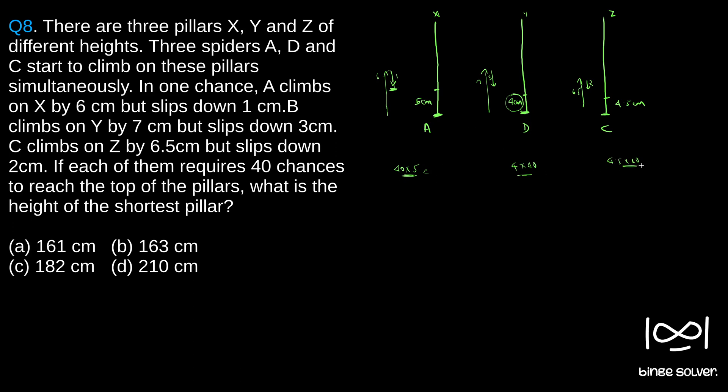If you see the smallest among this will be the height of the shortest pillar. So clearly 40 times 4 is much less than 40 times 5 or 40 times 4.5. So this will be the shortest pillar.